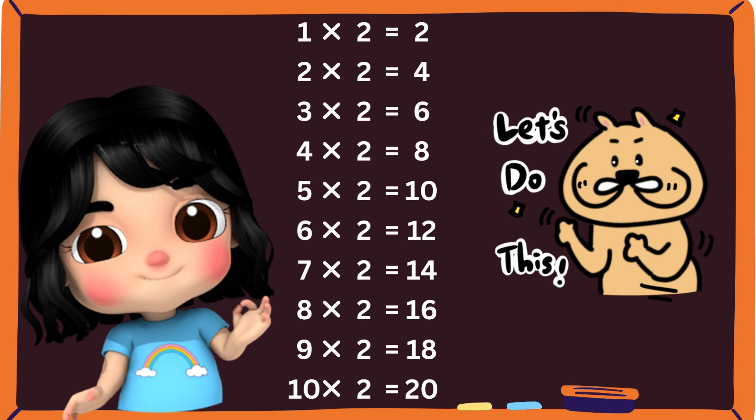Six twos are twelve. Seven twos are fourteen. Eight twos are sixteen. Nine twos are eighteen. Ten twos are twenty.